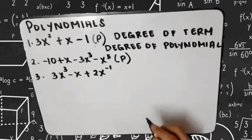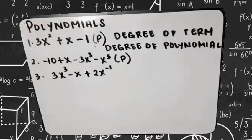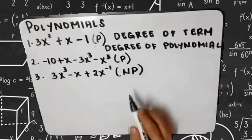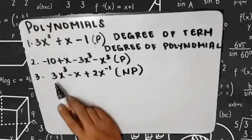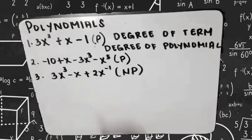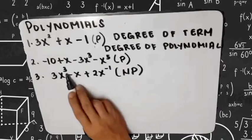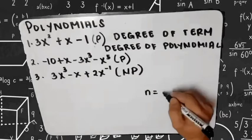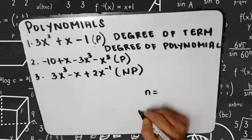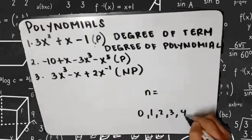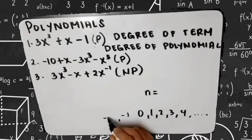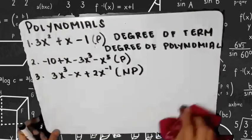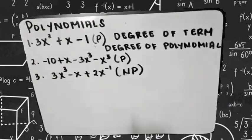For example number 3, this is NOT an example of a polynomial. Why? The coefficients are real numbers, so that condition is satisfied. But the exponent — while 3 is okay, the negative 1 exponent is not. The exponent n must be a whole number: 0, 1, 2, 3, 4, and so on. Negative numbers are not included. Since there is a negative exponent, it is not a polynomial.